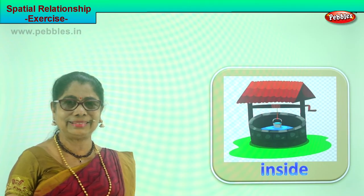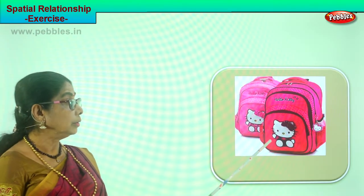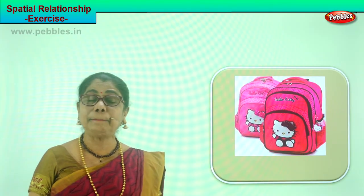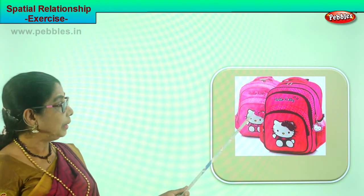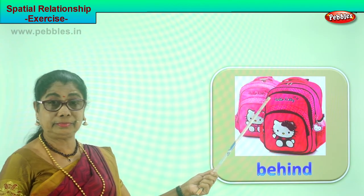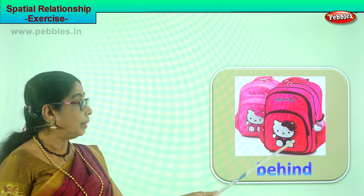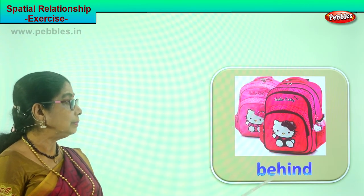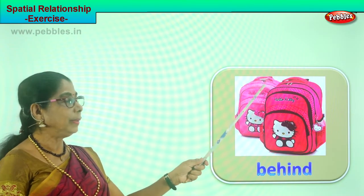Let's look at another picture. There are bags placed here. Where is the pink bag? The pink bag is behind the red one. And what is in front? You have a pink bag, a red bag, and the little pink bag is behind. The light pink bag is behind the dark pink bag — behind and front.